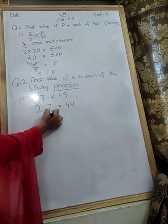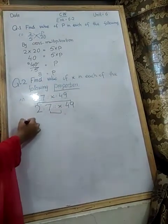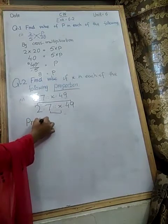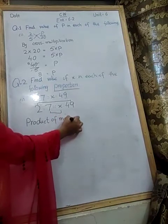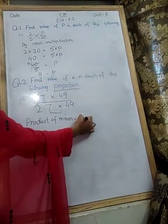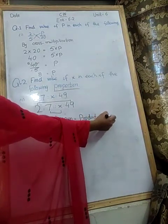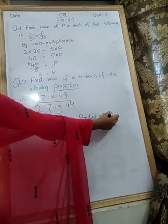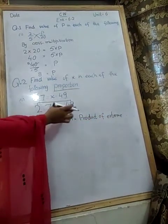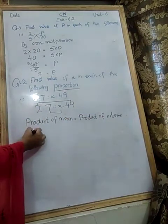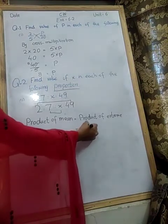You have a formula: product of mean is equal to product of extremes. Product of mean, product of extremes. Mean means the two values in the middle, and extremes means the two values on the outside. Product of mean: we will multiply the mean in the middle, 7 multiplied by X, then equal sign, and 2 multiplied by 49.